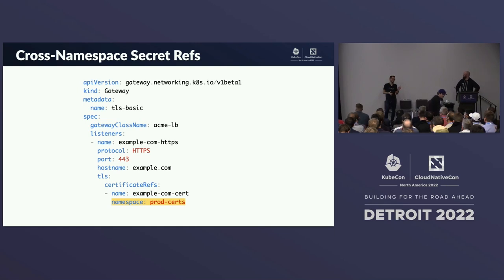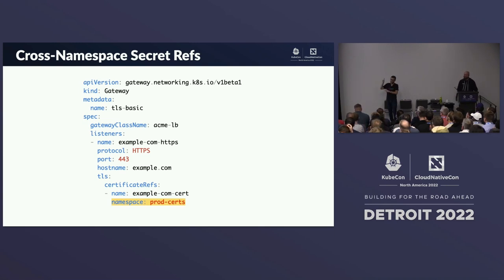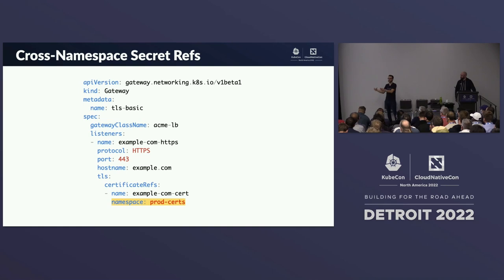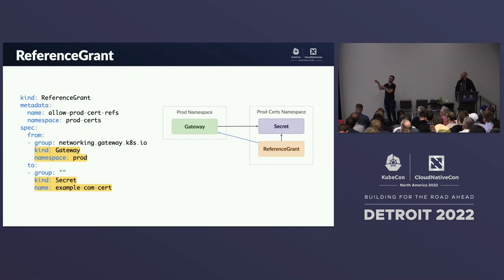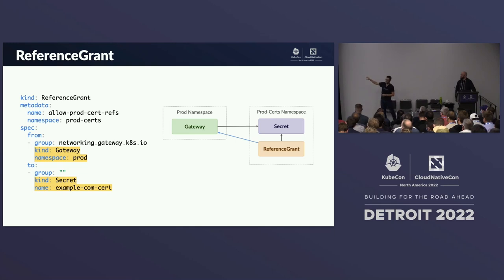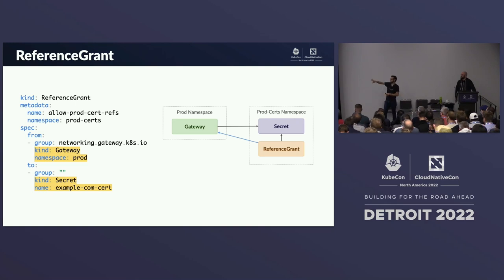That sounds dangerous — and you'd be right to be cautious. Just being able to reference any secret in any namespace without a safety mechanism is not ideal. So in Gateway API we built a handshake mechanism called ReferenceGrant. A Gateway says 'I want to reference this secret in another namespace,' and a ReferenceGrant in that namespace says 'I own the secret and I trust references from Gateways in that other namespace.' It's a two-way handshake ensuring both the owner of the secret and the owner of the Gateway agree the reference should take place.